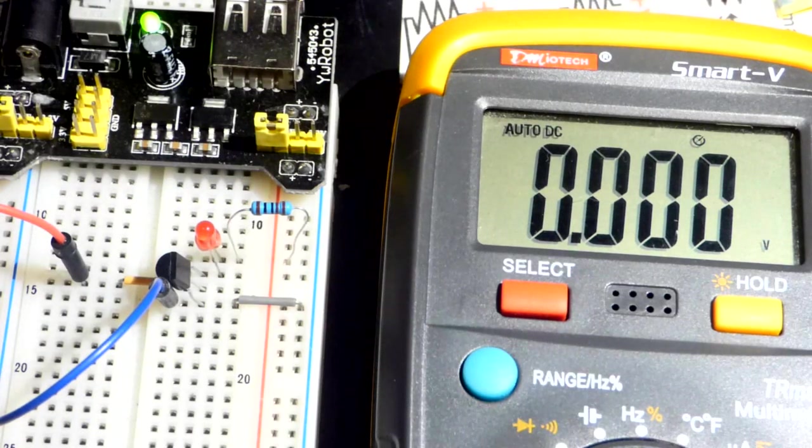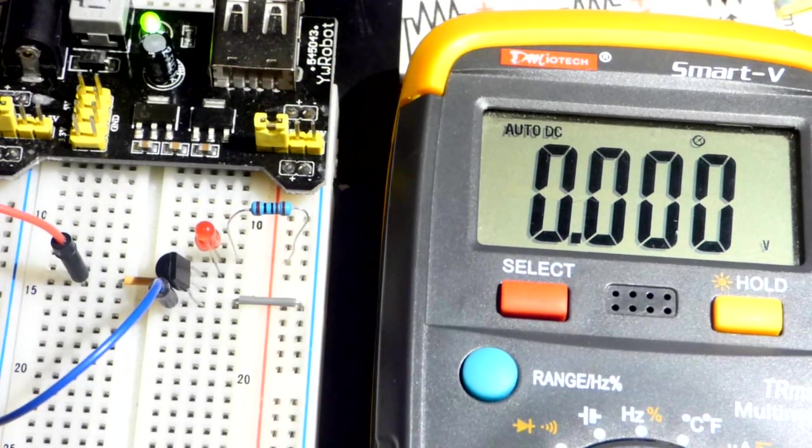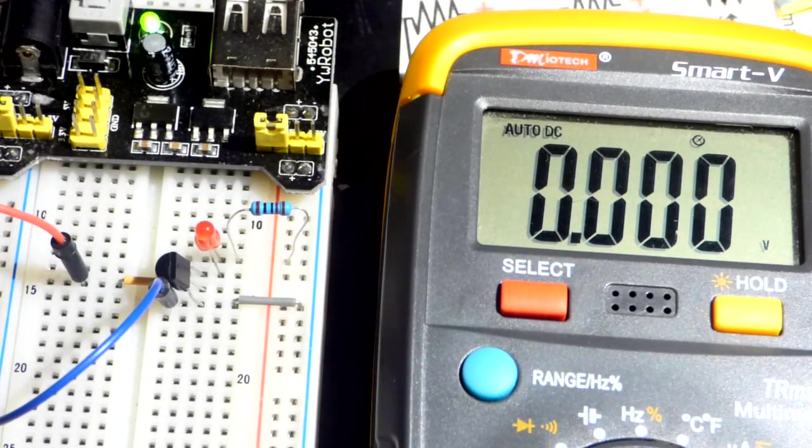Because just going by that definition alone, that the gate has to be, in this case, since it's P channel, more positive. With the N channel, the gate has to be more negative than the source. That's kind of confusing.